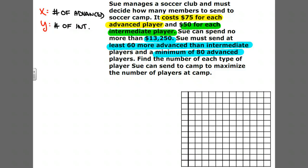Let's start talking about limitations on X and Y. In most of these real problems it doesn't make sense that X and Y are negative, so the number of players she sends is going to be non-negative. It also says she must send a minimum of 80 advanced players, so X has to be greater than or equal to 80.